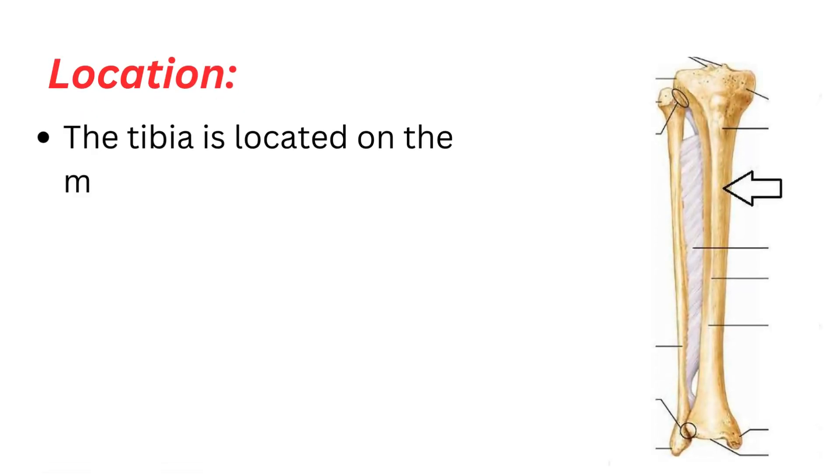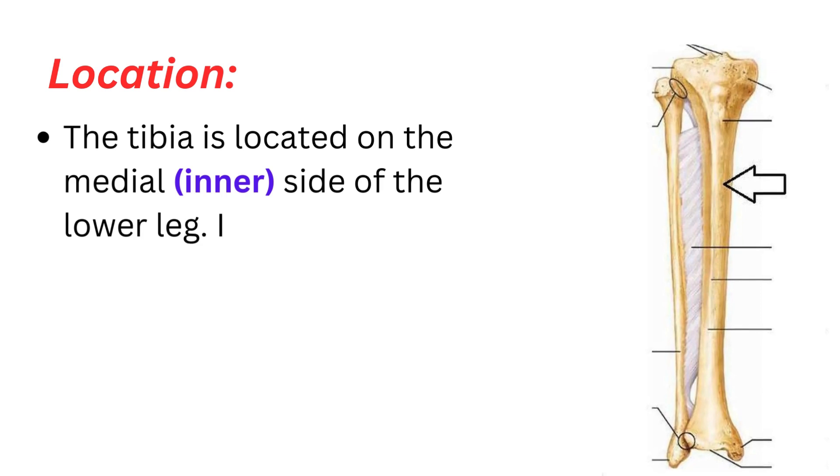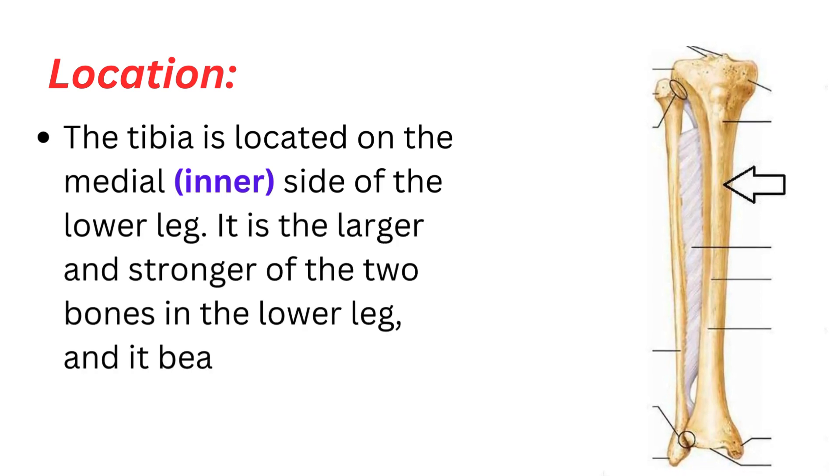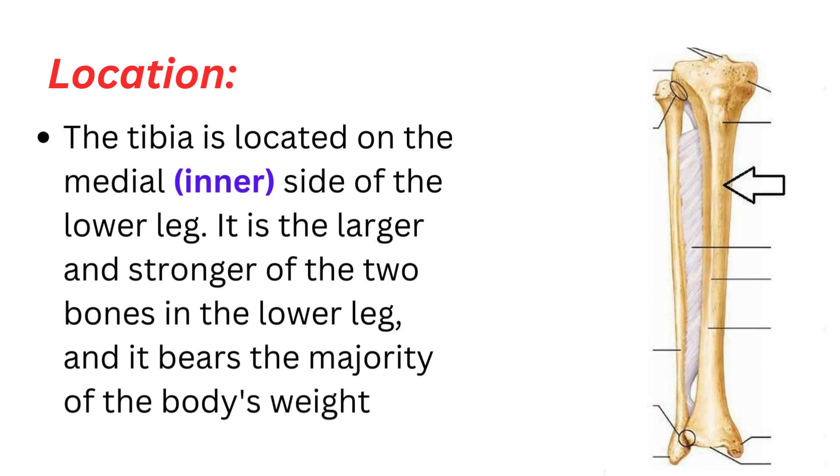Location: The tibia is located on the medial inner side of the lower leg. It is the larger and stronger of the two bones in the lower leg, and it bears the majority of the body's weight.